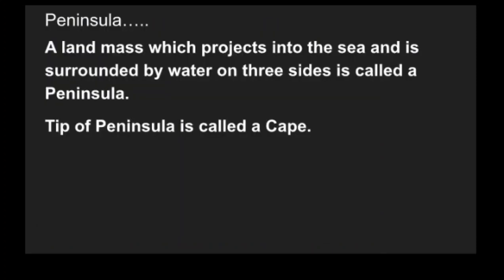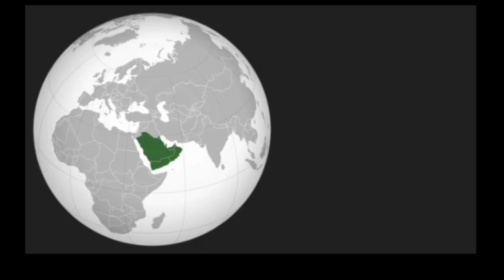The next feature is the peninsula. A landmass which projects into the sea and is surrounded by water on three sides is called a peninsula. What they are saying is that there is a landmass which on three sides is covered or surrounded with sea water, and one tip is connected with the main land. This green color you can see on the globe is your Arabian Peninsula. The image on the globe is the image of the Arabian Peninsula.